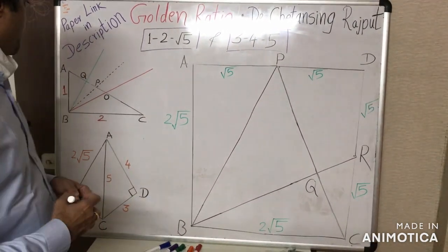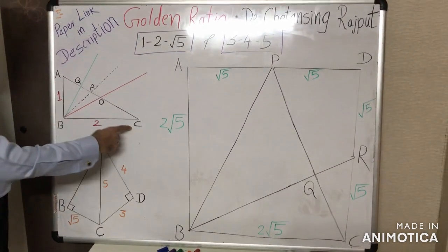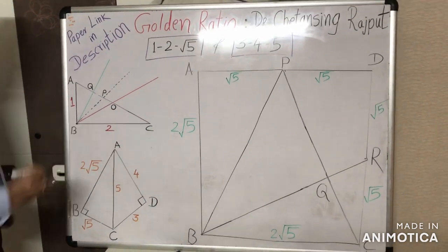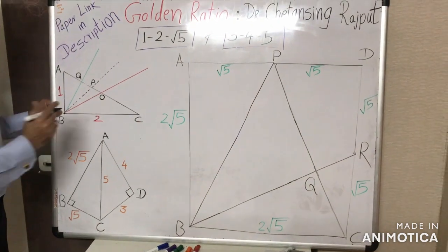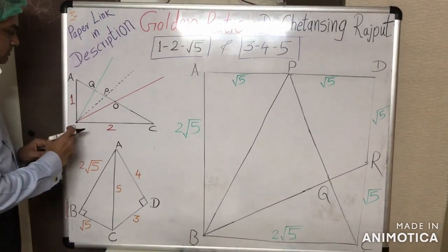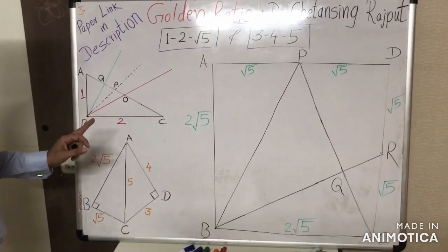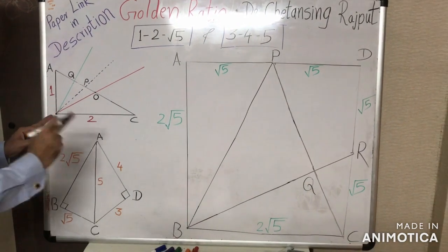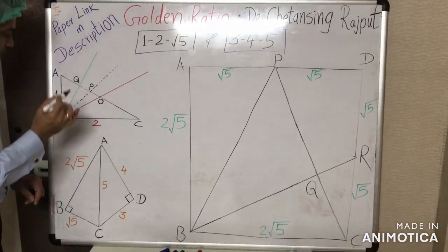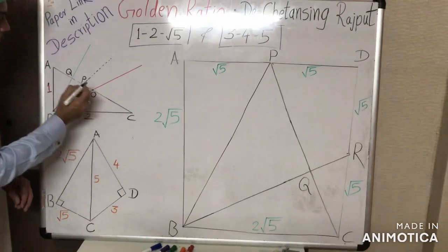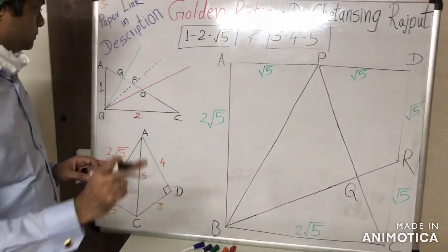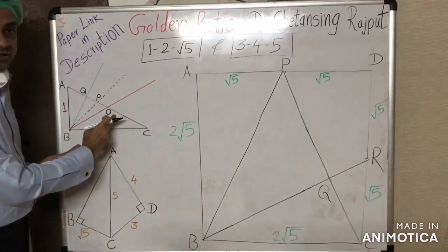Consider the reference triangle ABC, which is the 1:2:√5 right triangle. Since it is a right triangle, point B is also the orthocenter of this triangle, and the midpoint of the hypotenuse, point O, is the circumcenter of this triangle. Hence, line BO is the Euler line of this triangle. Importantly, BO is also the median on the hypotenuse — the smallest median — which coincides with this Euler line.